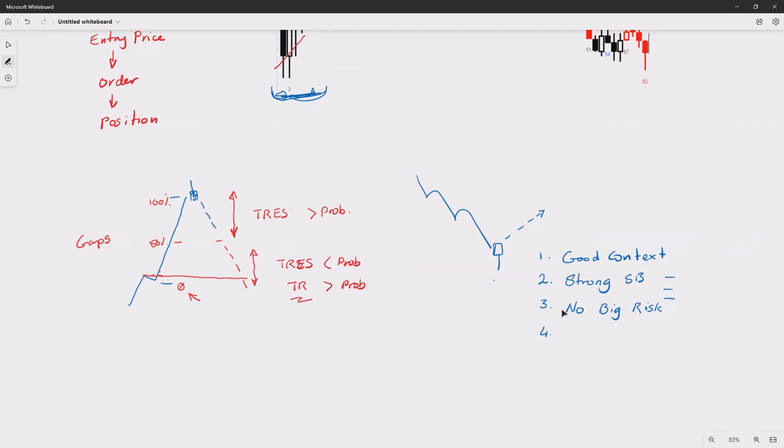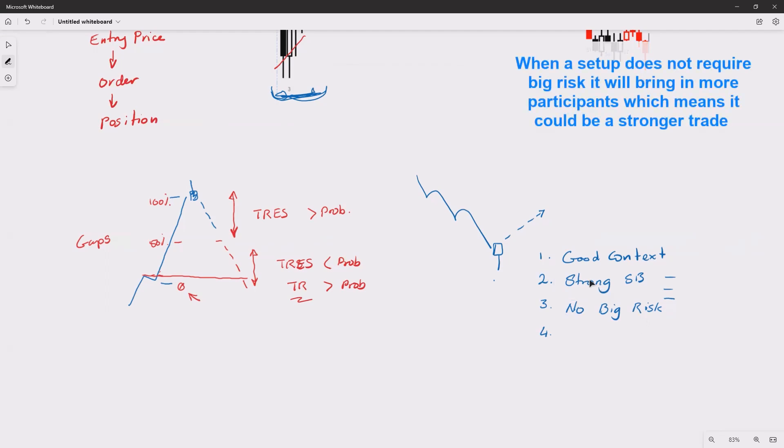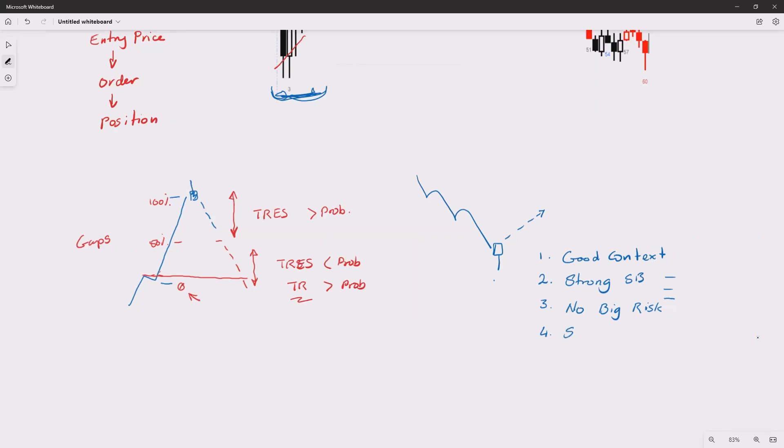The reasonable risk trade—no big risk—also means there's going to be a lot of participants because it's manageable, it's reasonable. So people will actually bet on this bar to work, and that increases the demand. So odds of follow-through go up.